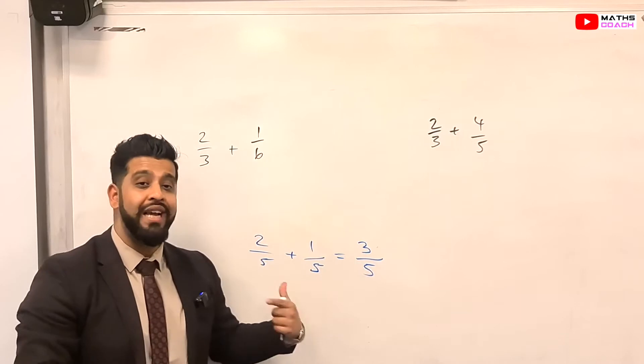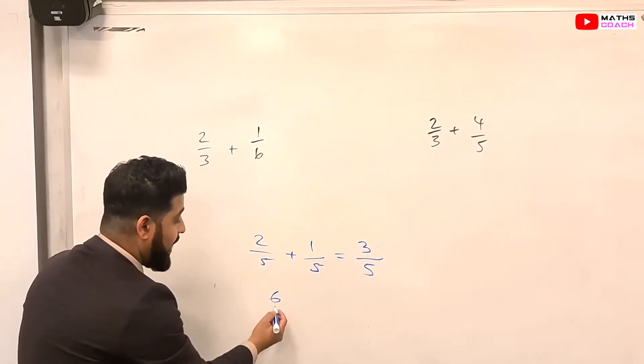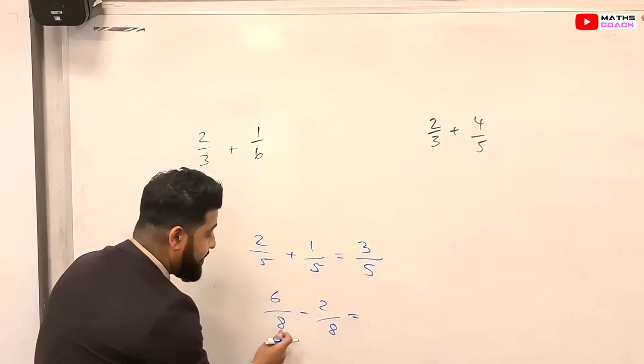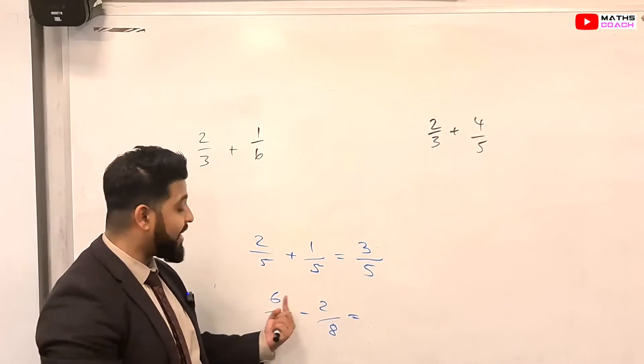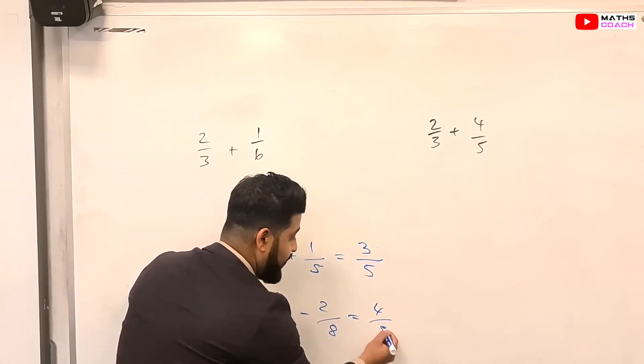And with takeaway, you do exactly the same thing. You could just take away. So, for example, you could have 6 over 8 minus 2 over 8. And because the denominators are the same, you could just take away the numerators. So you could do 6 minus 2, which is 4 over 8.